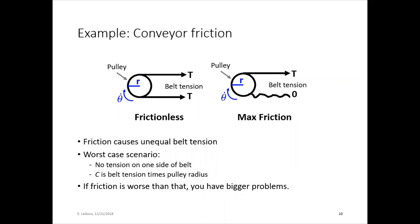For example, how to calculate the friction on the conveyor. Here, the friction on the pulley, so say this is a conveyor belt and this is a pulley. Friction will cause unequal belt tension. So if there's no friction, it's great. You have taut on the top, taut on the bottom, moving at a nice constant speed.